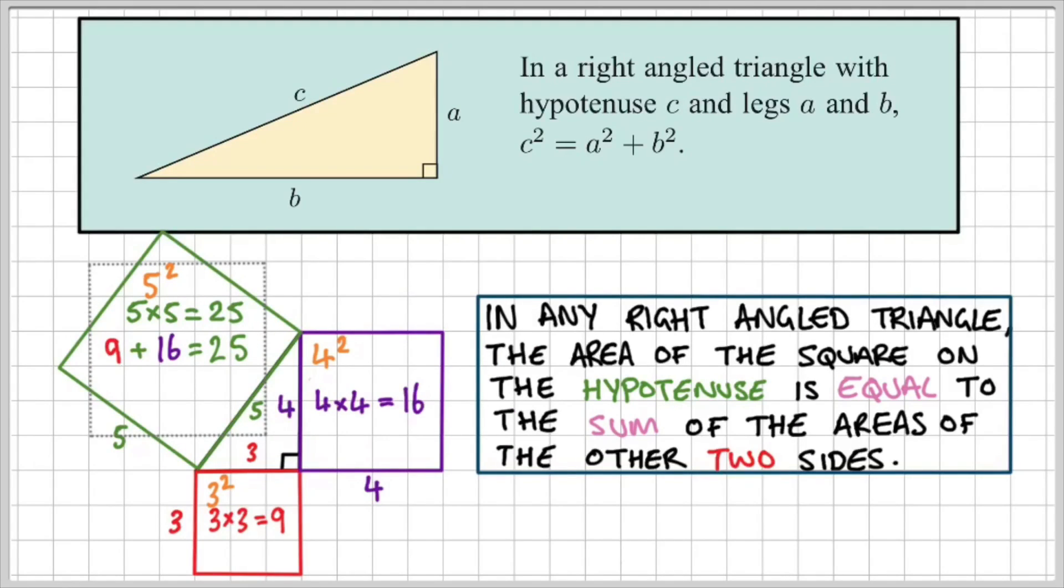So we can summarize by saying the area of the square on the hypotenuse is equal to the sum of the areas of the two other sides.